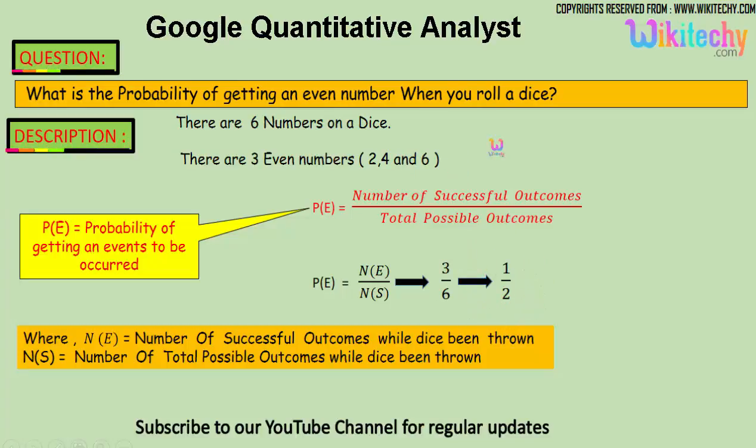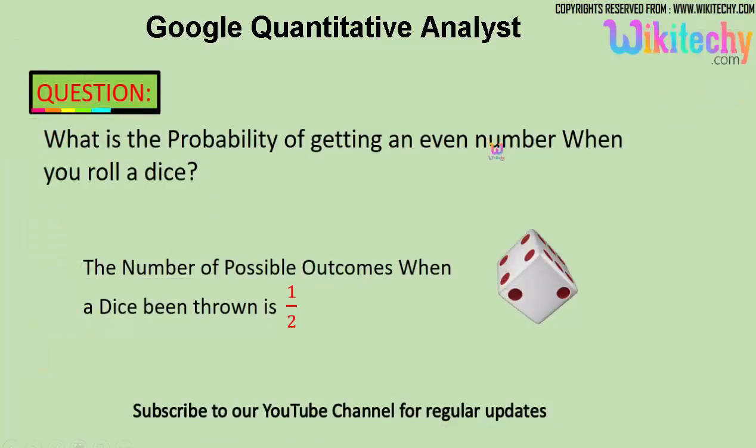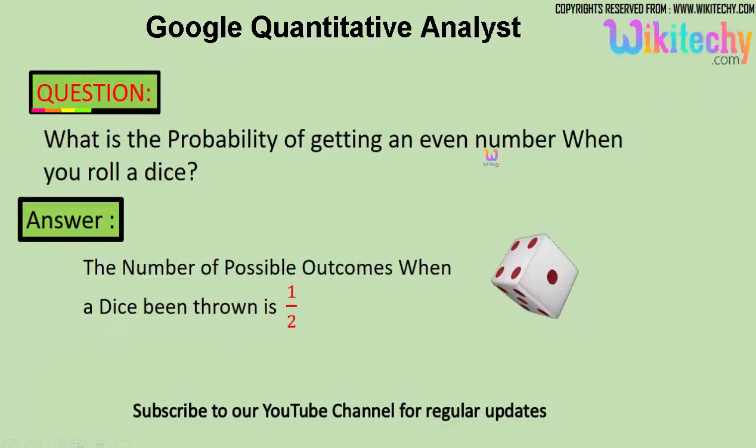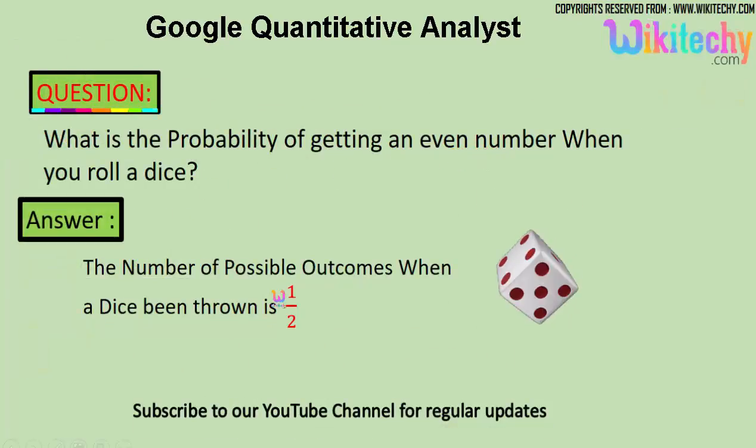Three by six gives you one by two. So the probability of getting an even number when you roll a dice is one by two. That's the answer.